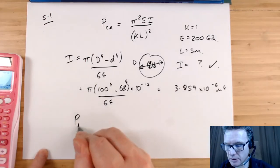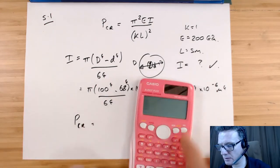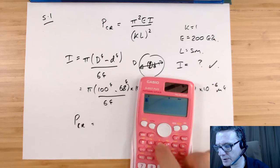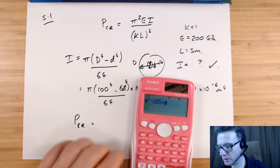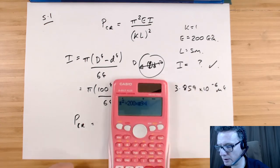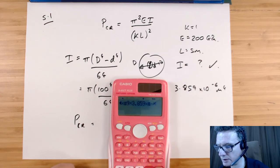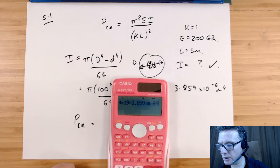So let's stick it all in. P critical equals π² times E, so that's 200 giga is going to be times 10⁹, times 3.859 times 10 to the minus 6, divided by L, so that's 5 squared.